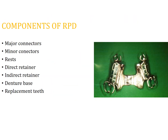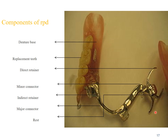The components of an RPD include: the major connector, which forms the bulk of the RPD; minor connectors, which are any part of the RPD that is not a major connector, direct retainer, or clasp assembly; rests, placed on occlusal and incisal surfaces of teeth to provide support; direct retainers, which are clasps; indirect retainers; and the denture base, which covers the minor connectors and carries the acrylic teeth.